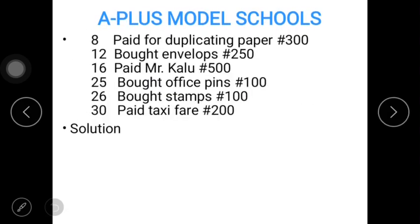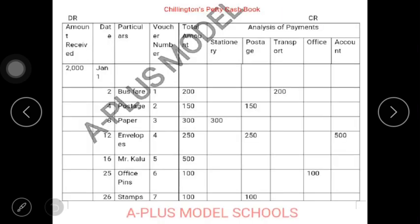January 8: paid for duplicating paper, 300. Anything that has to do with paper will fall under your stationery. So you have January 8, paper, which is your third voucher — 300 for that day. And that is the only transaction that took place for that day, so your total amount for that day will be 300.